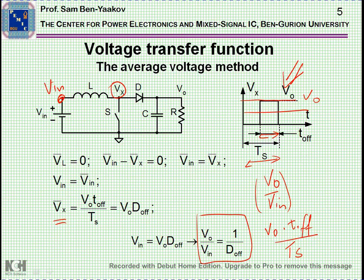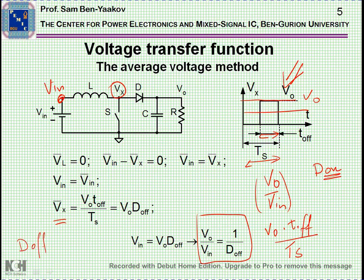What does it mean? It means that when the duty cycle — D on, the time that the transistor is on — is very short, then D off is very large. The simple relationship between the two is: D off is 1 minus D on. So when D on is short, D off is large, and the gain is low.